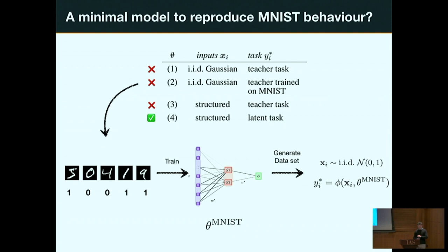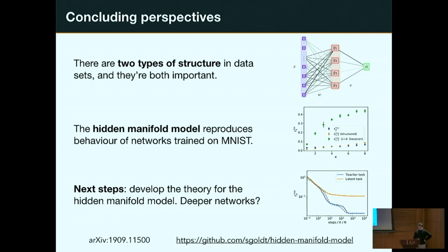To wrap up: there are two types of structure in datasets, and both are important if you want a good model for data. The hidden manifold model I've presented captures both. There's a lot of work still to be done — we're working on more theoretical analysis of the dynamics and performance of different models on data from this model. Stay tuned, and thank you.